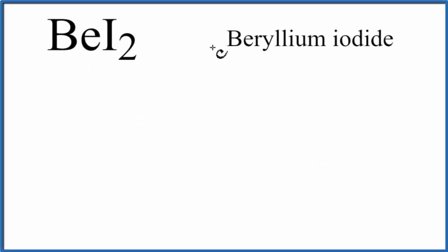To write the Lewis structure for BeI₂, that's beryllium iodide, let's count the valence electrons up.